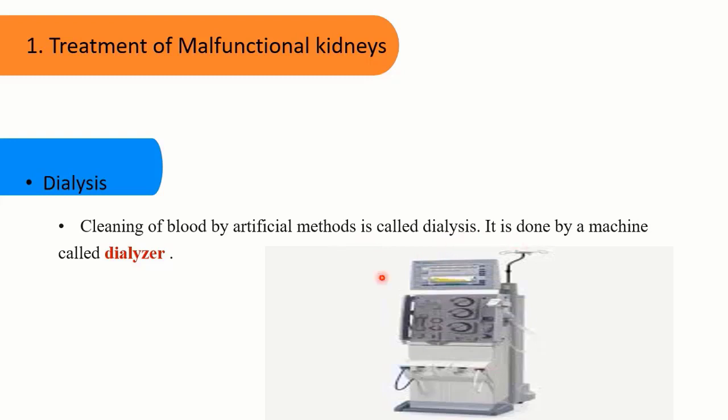Dialysis is done by the dialyzer, a machine which acts as the artificial kidney. In a healthy kidney, waste products, excess fluid, ions, and salts are removed from the body in the form of urine. But in case of kidney disease or failure, the kidney stops functioning and is unable to remove nitrogenous waste.